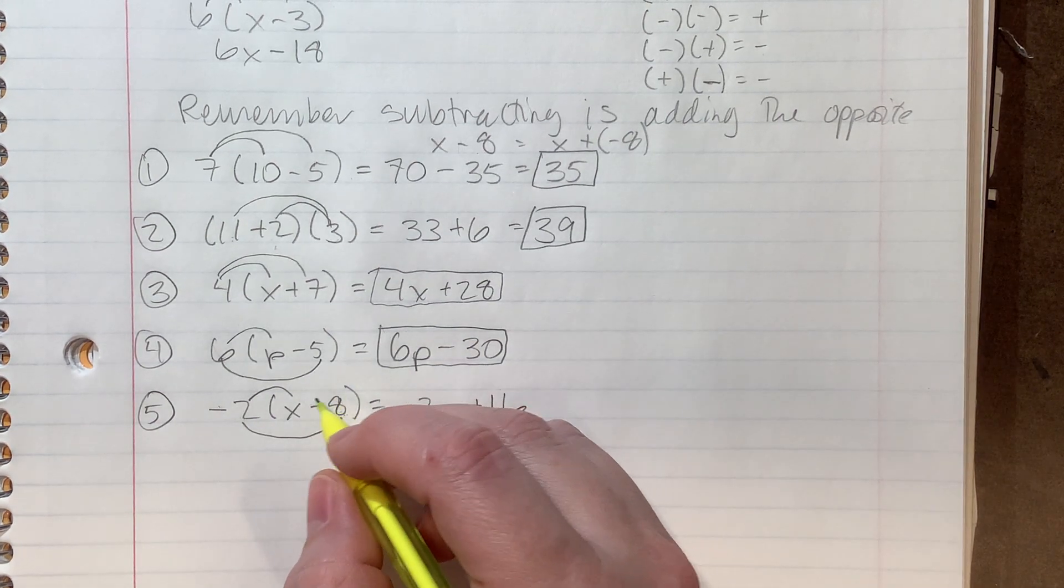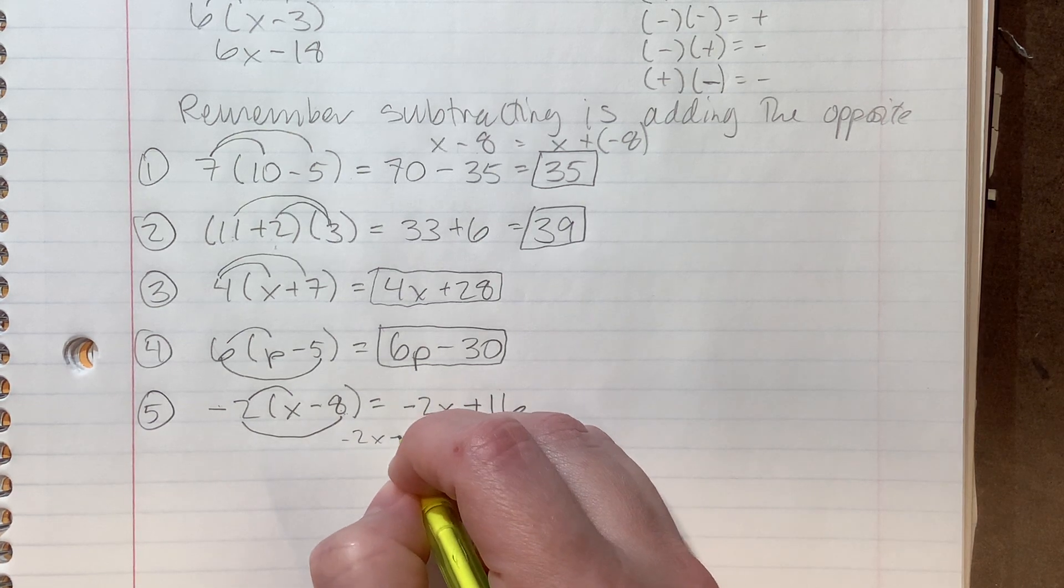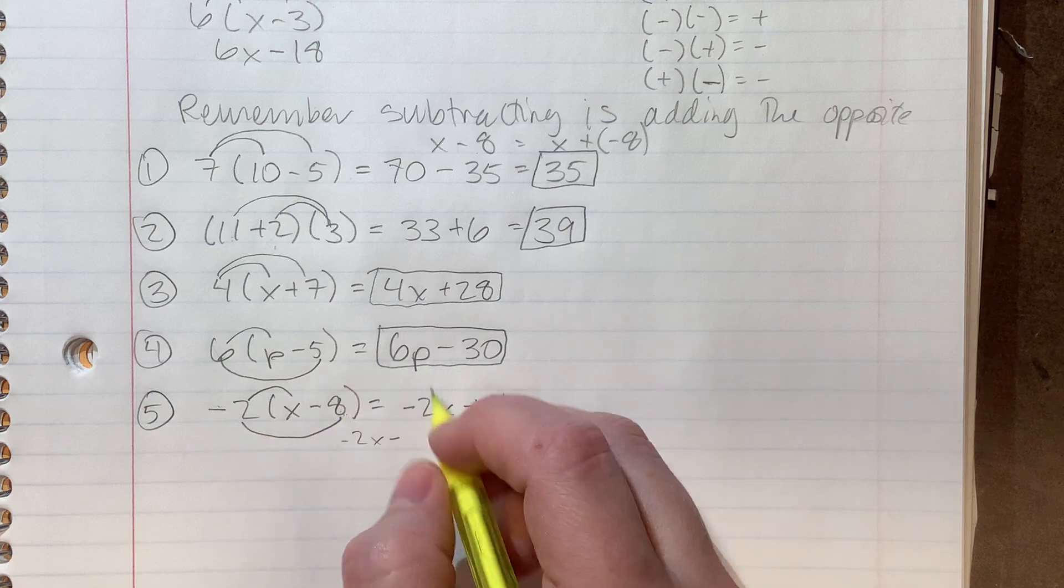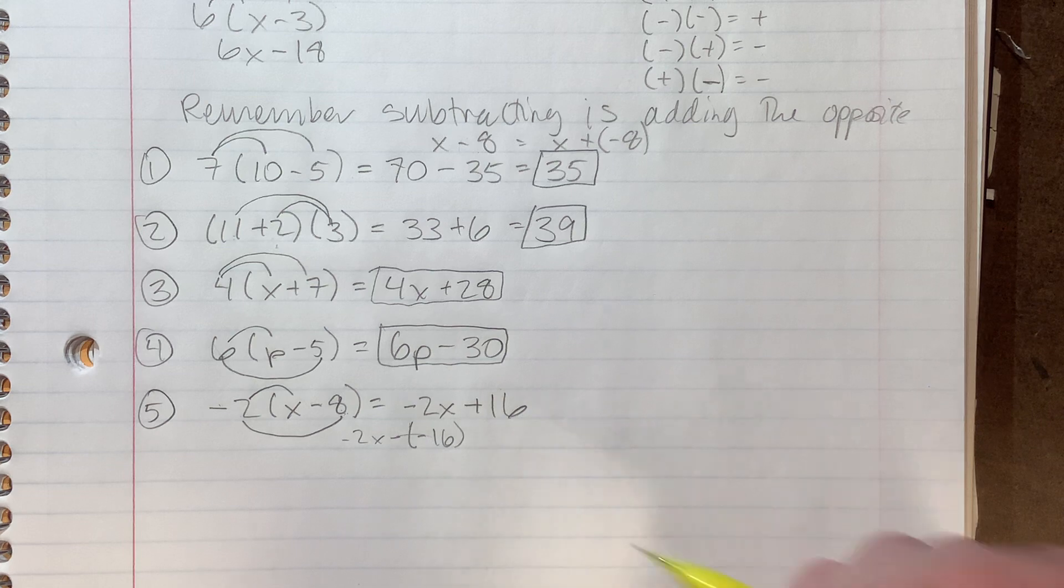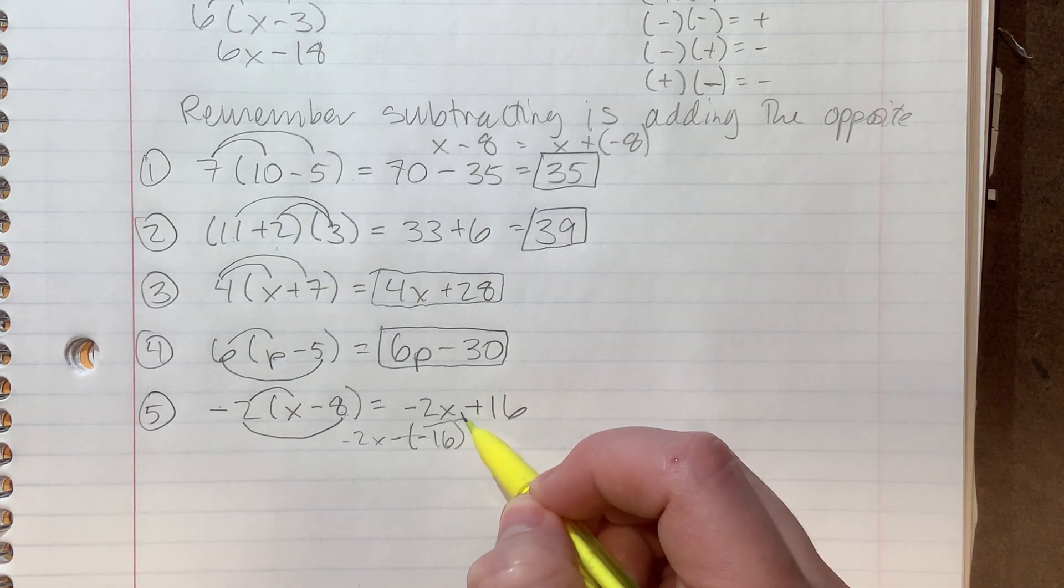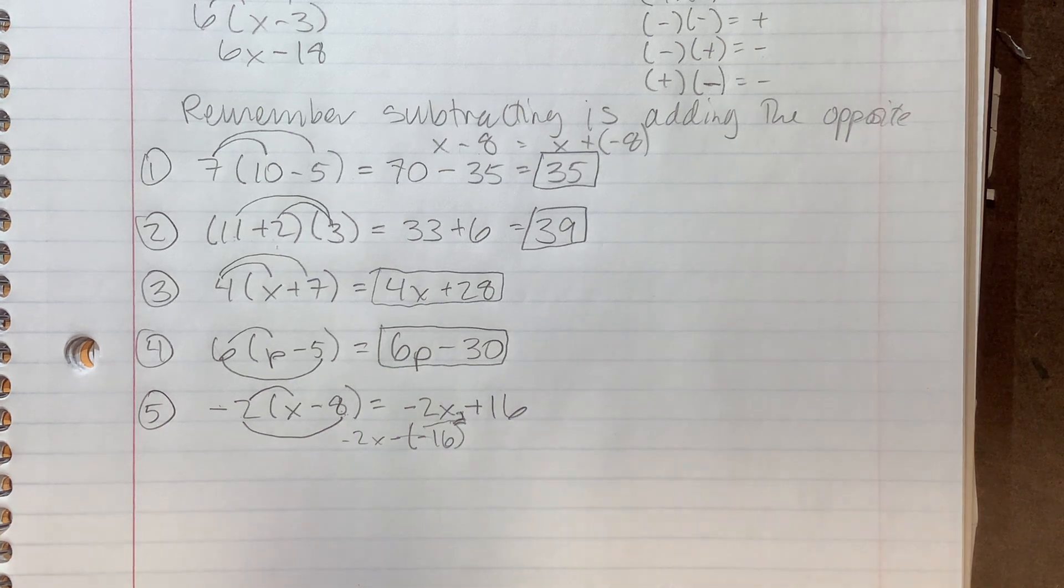If we wanted to do it the long way out, I guess we could do negative two minus and then negative two times negative eight, which would be 16. And that gives us a squinty face. I just kind of didn't want to write that up. So I went a little faster. Hopefully that makes sense.